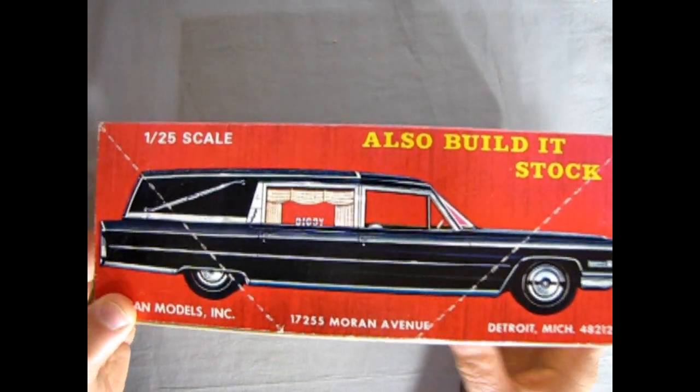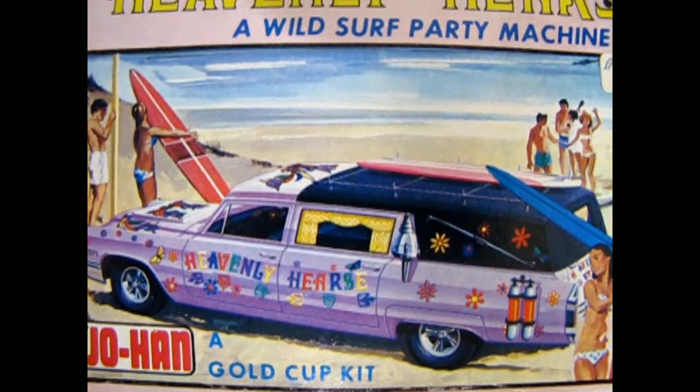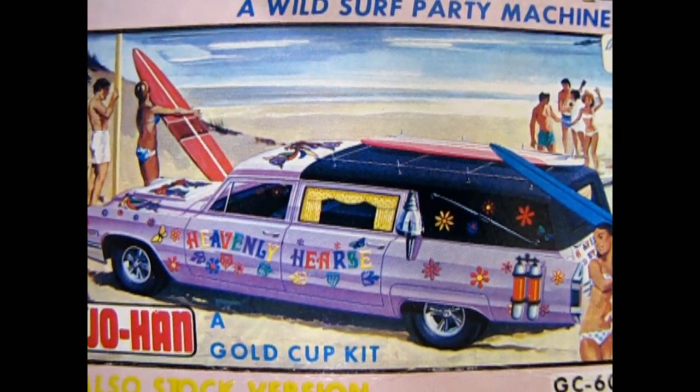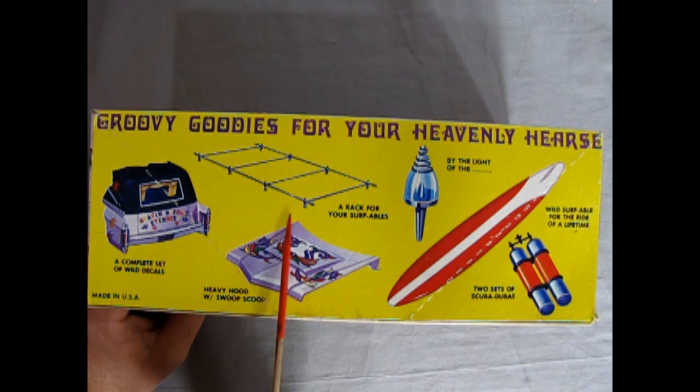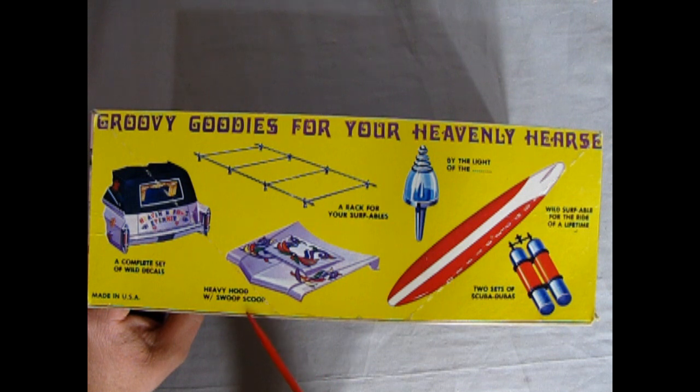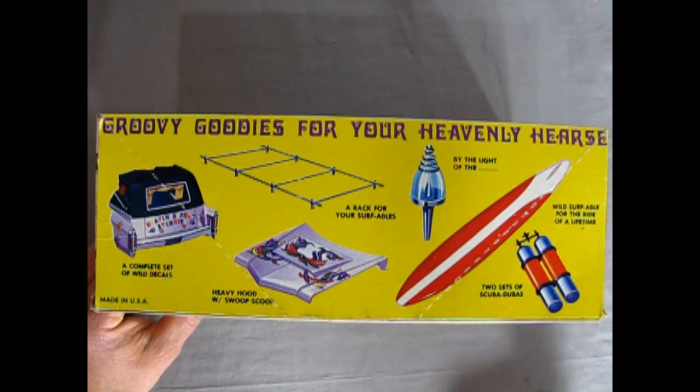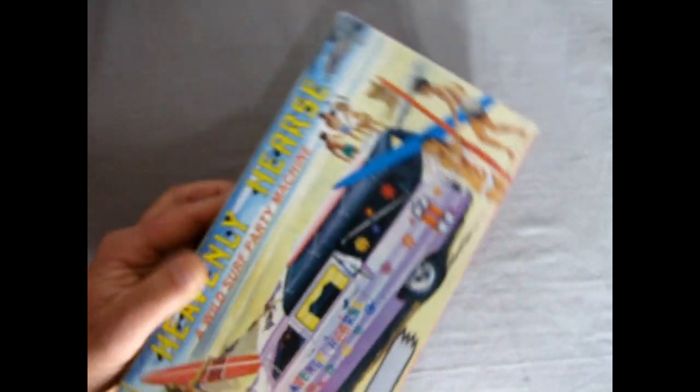There's also a drag racing hearse out there as well. Now, if you turn the box up on this side and just zoom out a little more, we can see that this was one of Johan's Gold Cup Series model cars. And again, very nice artwork, very cool. You can imagine a whole bunch of groovy mods from 1966 hanging out on the beach. Here they show a complete wild set of decals, a giant rack for your surfables, the heavy hood with swoop scoop, and by the light of the lamps, you also get these great surfboards and two sets of scuba diving tanks, and a wild surfable for the ride of a lifetime. Groovy goodies for your heavenly hearse. Perfect timing for 1966 with the mod scene that was very popular, mixed in, of course, with the surf scene.